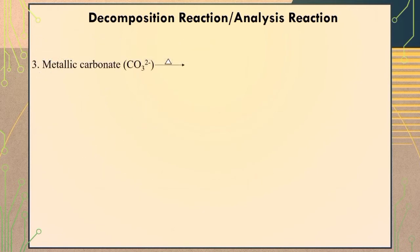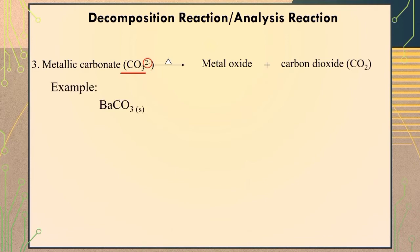The third type of decomposition reaction is the decomposition of metallic carbonate. When heat energy is applied to metallic carbonate, it will dissociate into metal oxide plus carbon dioxide. Remember that carbonate is a polyatomic ion having only one charge, which is negative two. For example, when heat energy is applied to barium carbonate, it will dissociate into barium oxide, which is the metal oxide, plus carbon dioxide. Through inspection, we can say that the equation is balanced by itself.